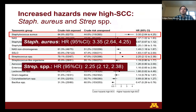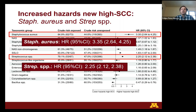We found that certain microorganisms such as Staph aureus and Staph species were related to an increased risk of new high somatic cell count. The risk of high somatic cell count in cows with a Staph aureus infection was 85%, while in cows without Staph aureus it was 45%, yielding a hazard ratio of 3.45. A similar result was found for Strep species with a hazard ratio of 2.25, suggesting an increased risk of subclinical mastitis during lactation.